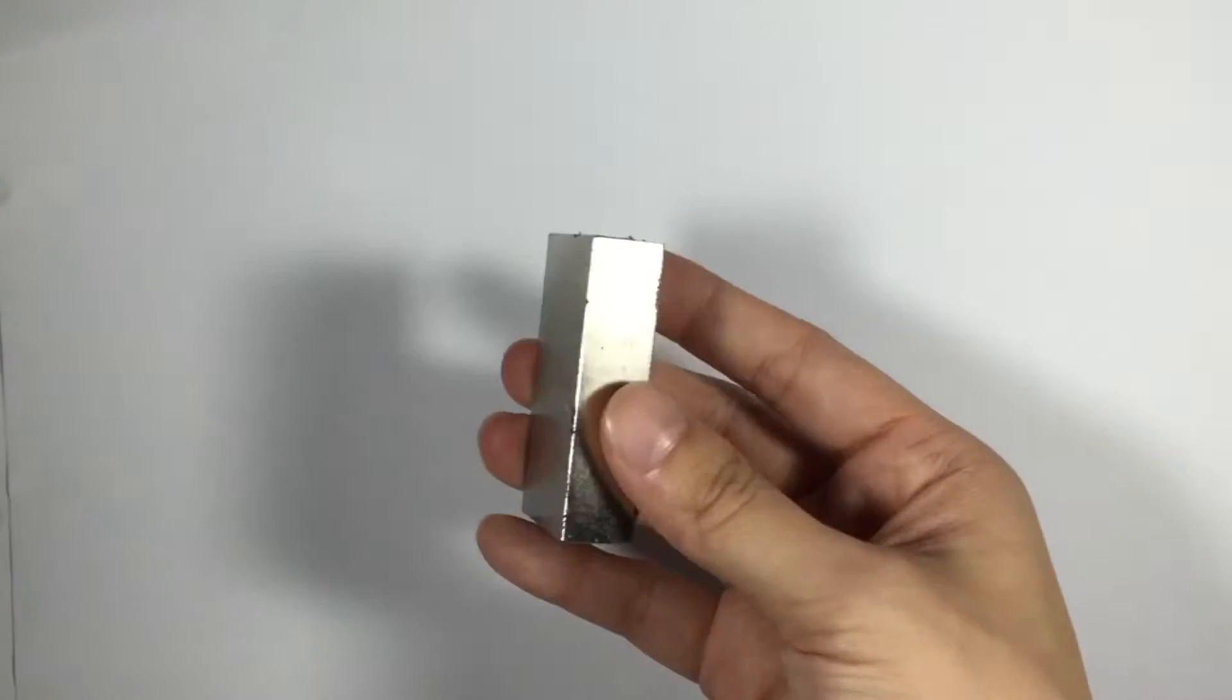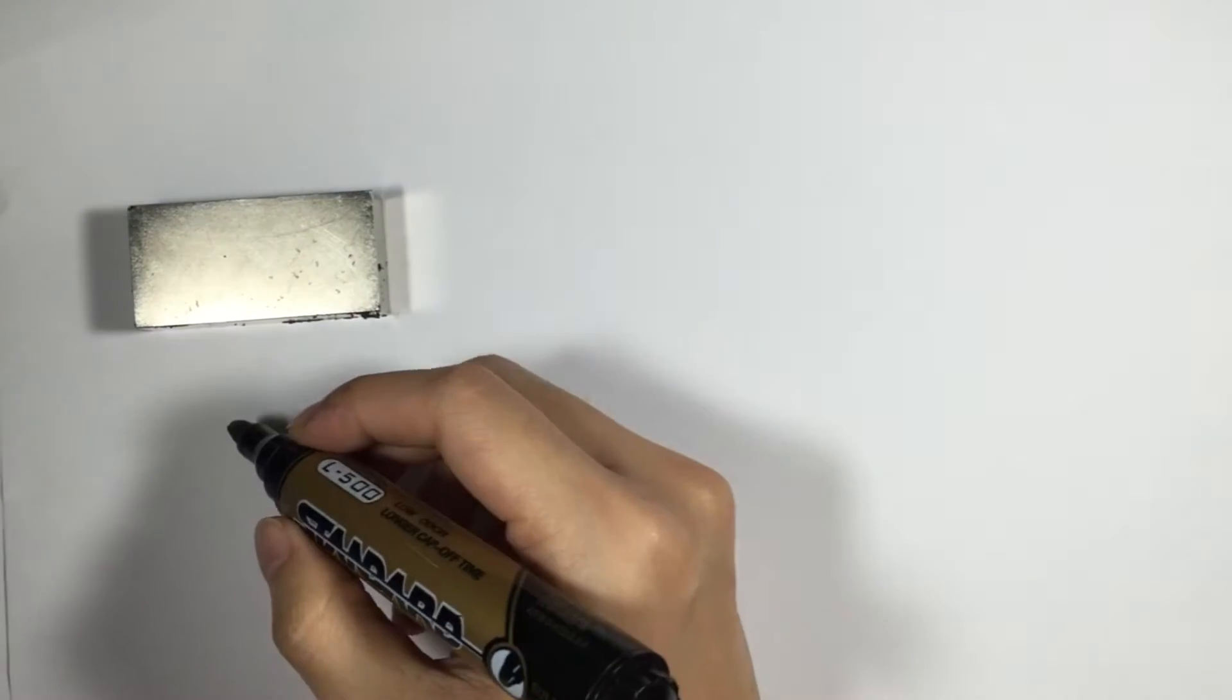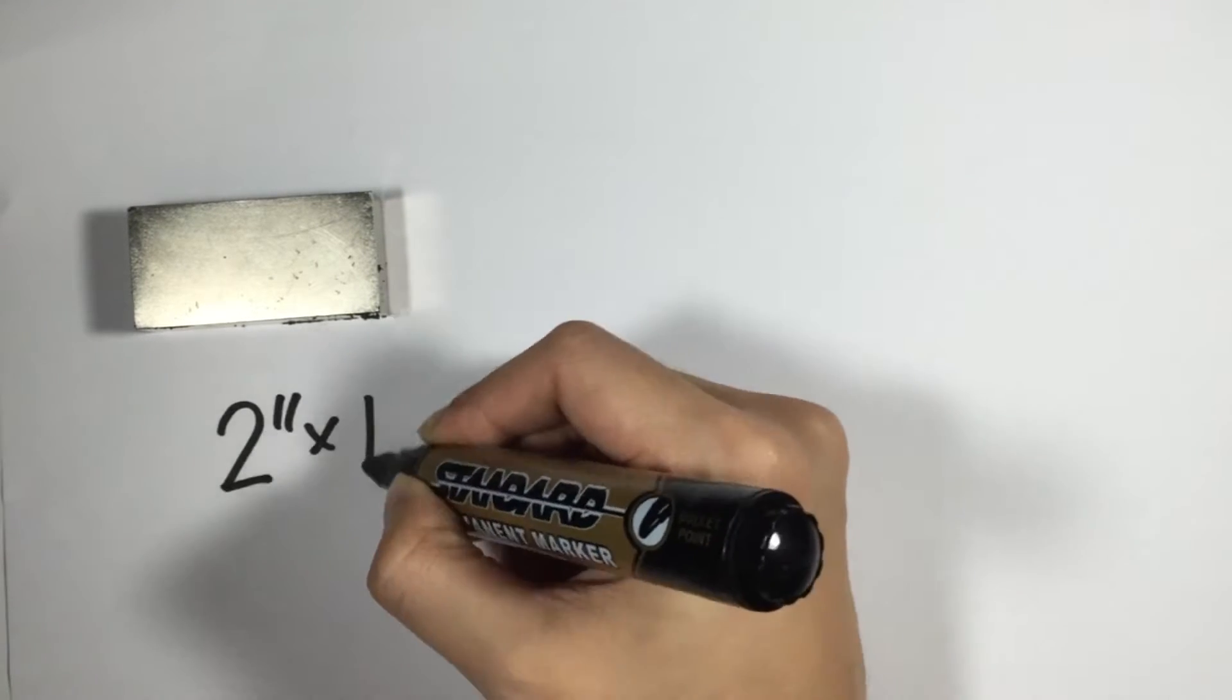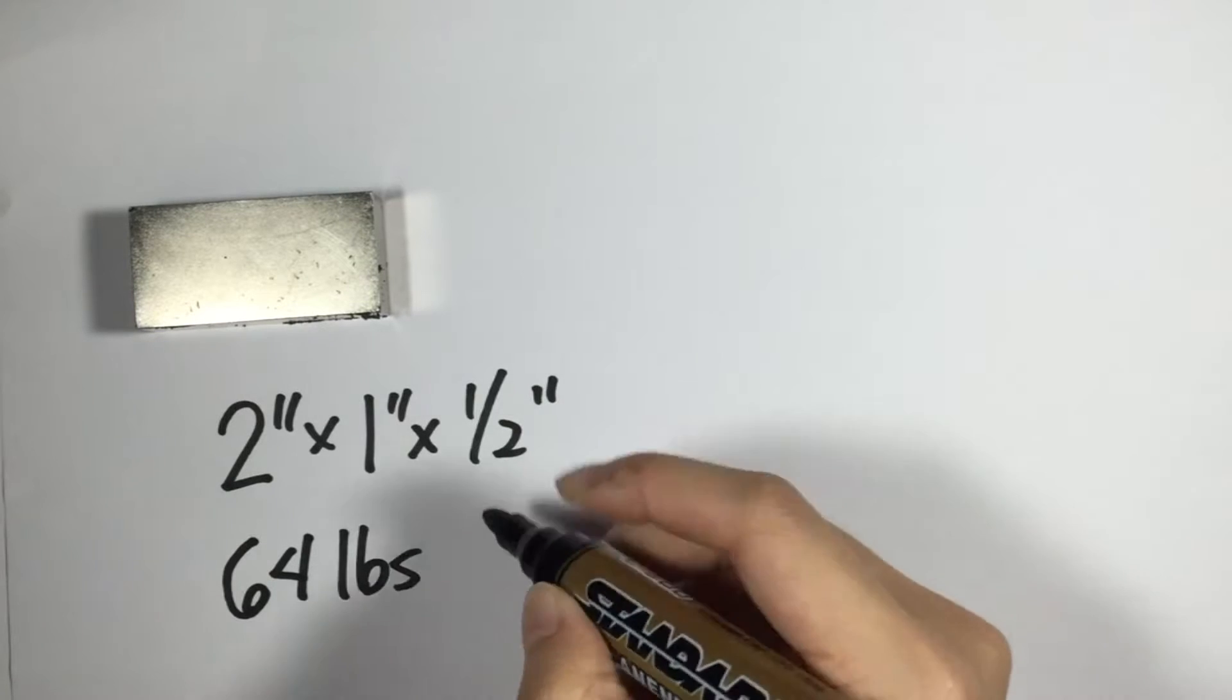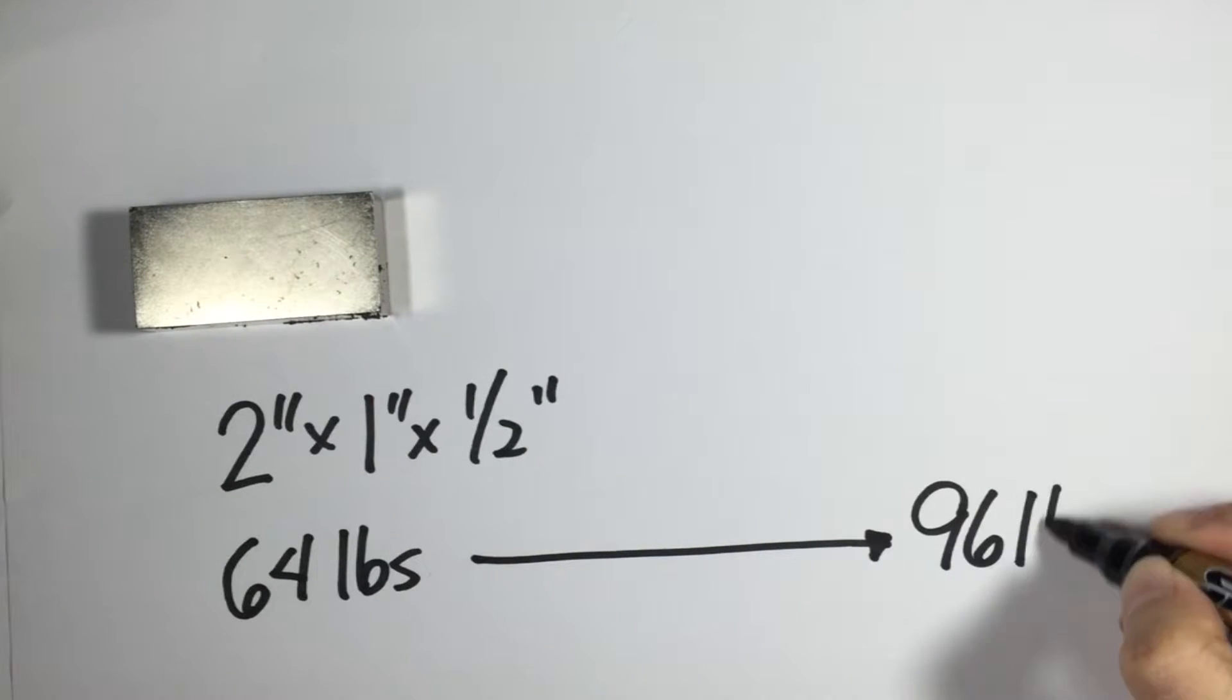So, let's start. Every size and type of magnet has varying strengths. For starters, this 2x1x1.5 can hypothetically hold 64 pounds with its lowest grade and 96 pounds with its maximum grade.